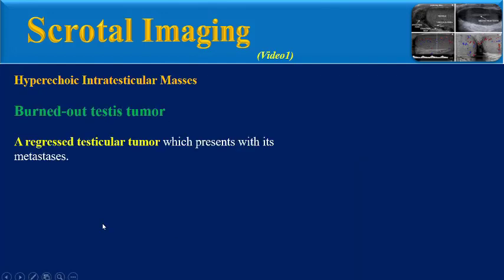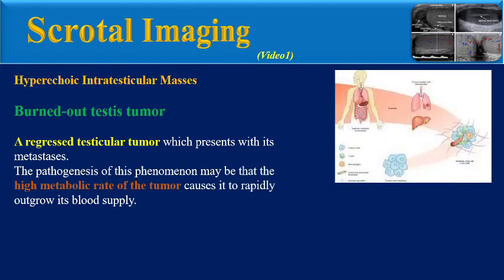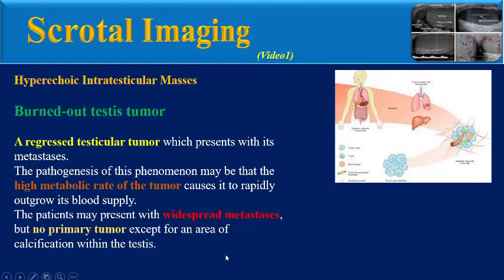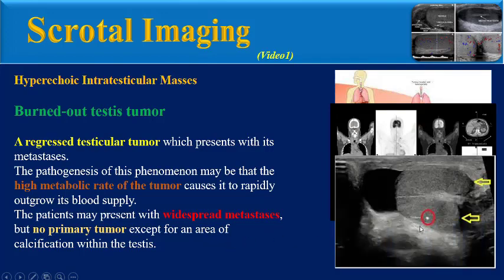The second important entity is burned-out testis tumor. It is a regressed testicular tumor which presents with its metastasis. The pathogenesis may be that the high metabolic rate of the tumor causes it to rapidly outgrow its blood supply. Patients may present with widespread metastasis but no primary tumor, except for an area of calcification within the testis.